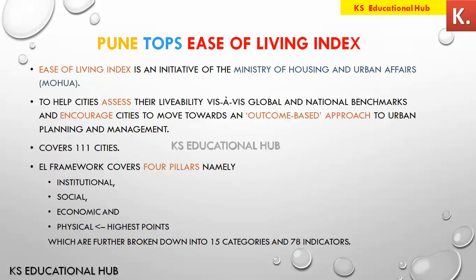This index covers 111 cities. The Ease of Living Framework is distributed in four pillars: institutional, social, economic, and physical. Out of these, the physical pillar carries the highest points for judging which city has better liveability.